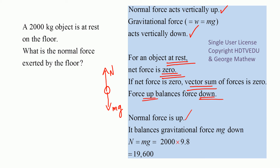Normal force acting upward balances gravitational force mg acting downward. Do not forget: gravitational force is mass times acceleration due to gravity. So normal force is equal to mass times acceleration due to gravity. Even though we may not have a direct expression, by looking at the object at rest we can determine the normal force.